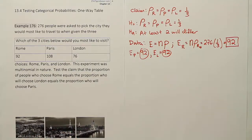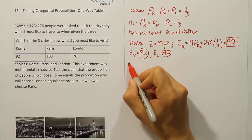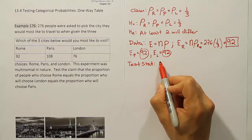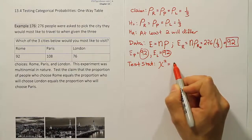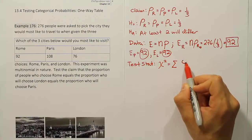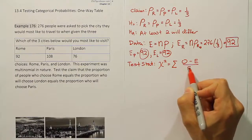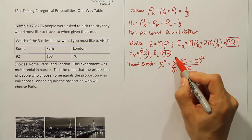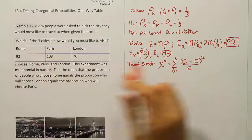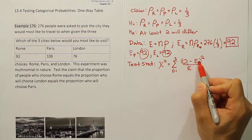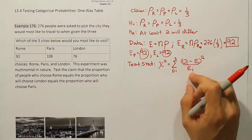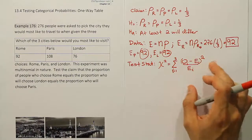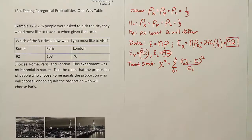The data step is done — we have the expected value for each of the three cells. Our next step is to come up with the test statistic. In this case the formula is chi-squared, which is the summation of (observed minus expected) squared, divided by expected, summed across all cells. The first time through we get the fraction for Rome, then for Paris, then for London — so three fractions added together.